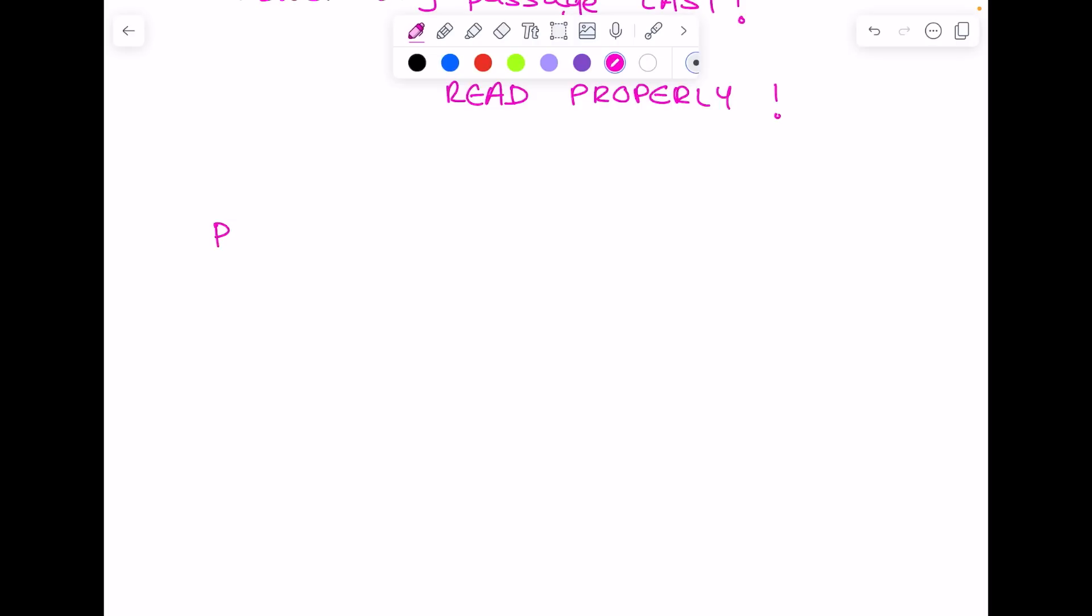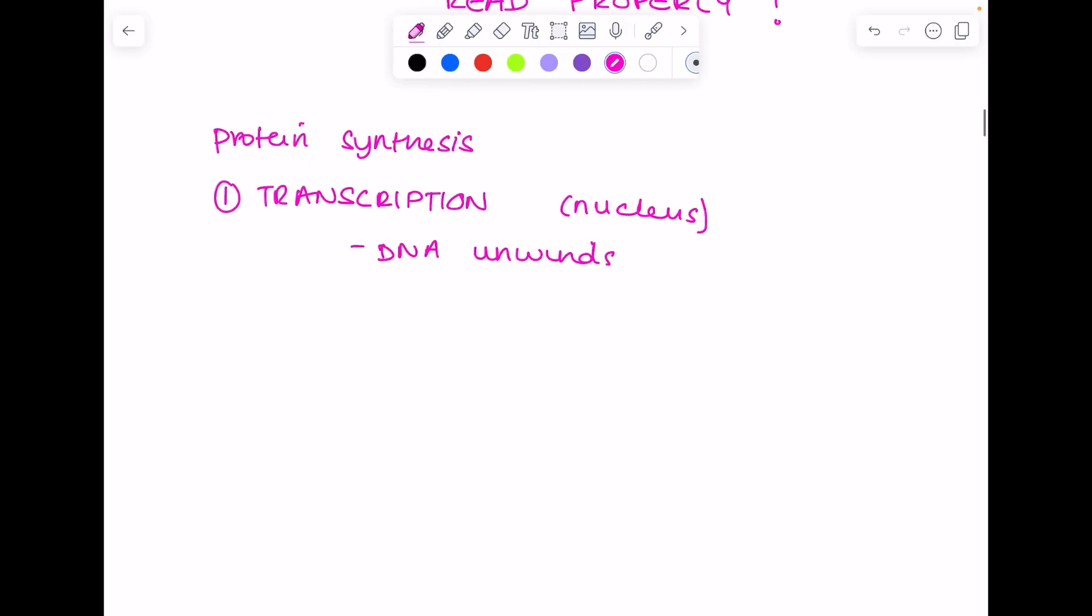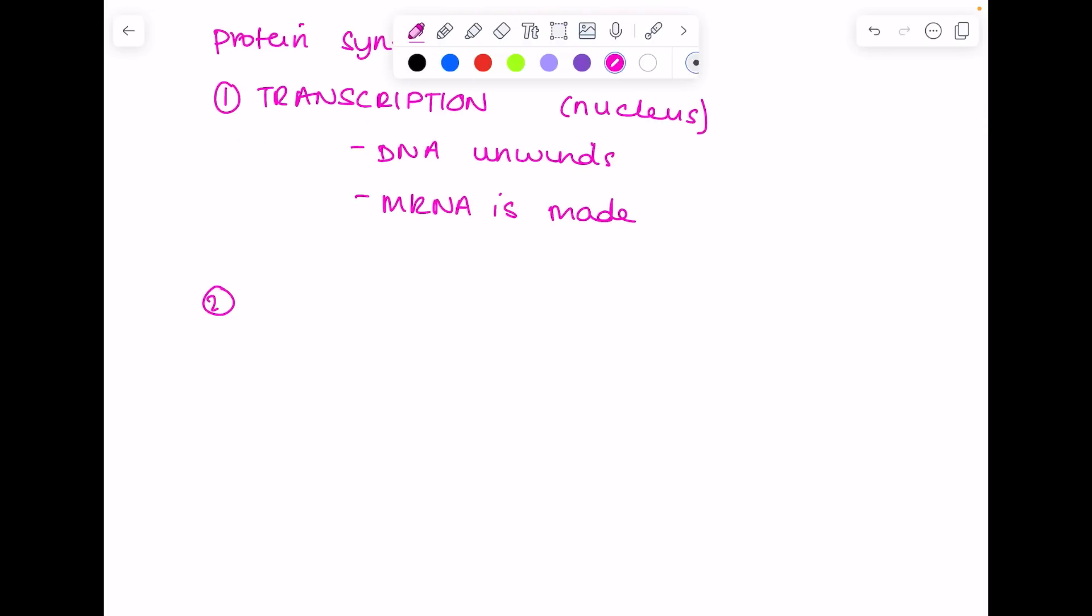Let's go through some quick notes. Paper two content as concisely as possible. Remember protein synthesis occurs in two stages: transcription, which occurs in the nucleus. This is when the DNA unwinds and single-stranded mRNA is made.